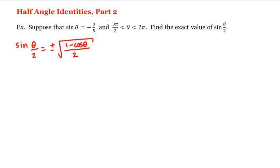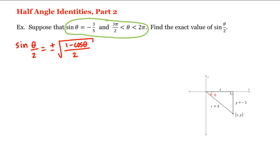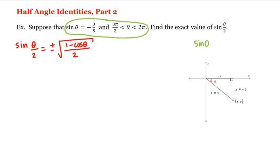We're given that sine of theta is negative three-fifths and that theta is between three pi halves and two pi. Therefore, we can draw the following triangle. Remember that sine of theta is equal to y divided by r, and if this is negative three-fifths, notice we put the negative with the y because y's are negative in quadrant four and r is always positive.